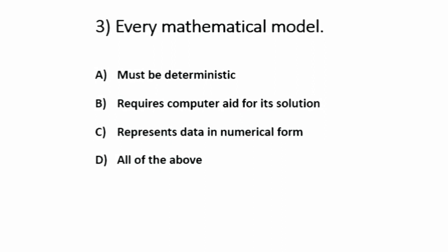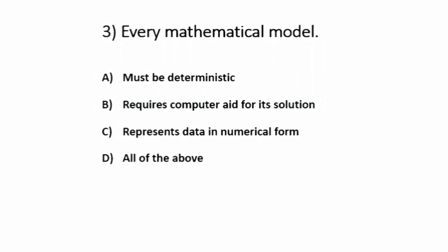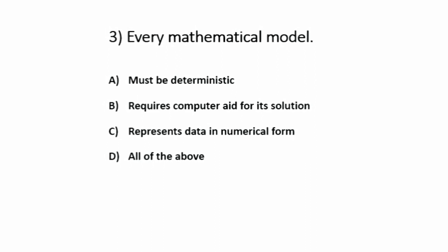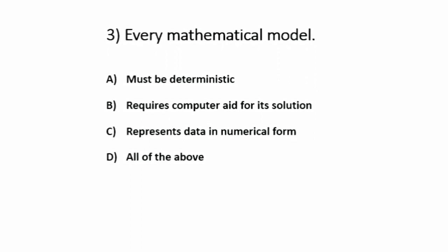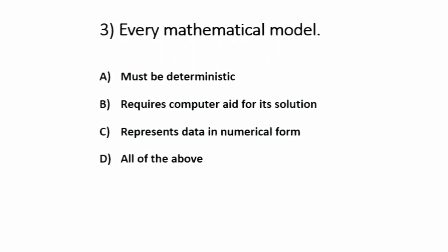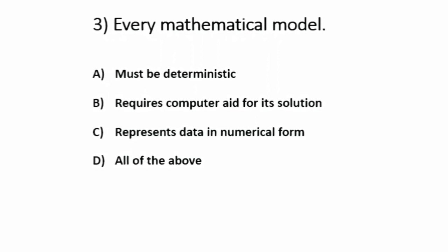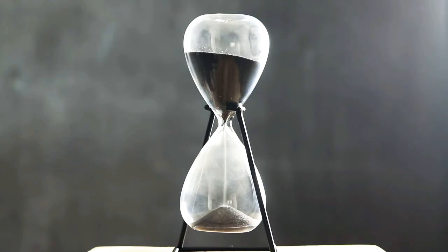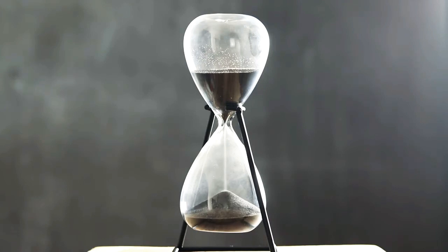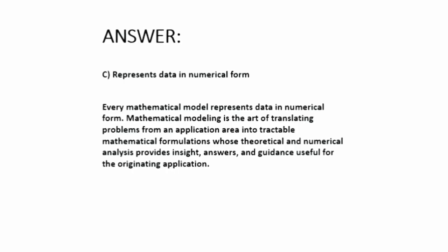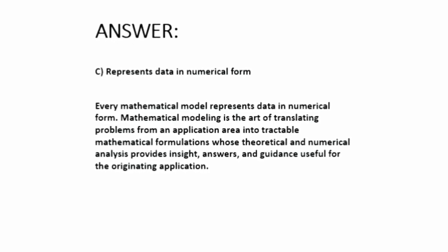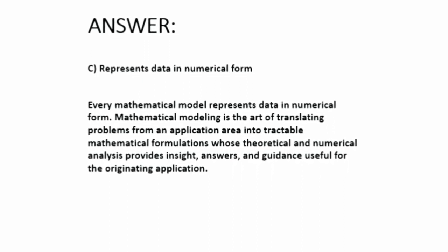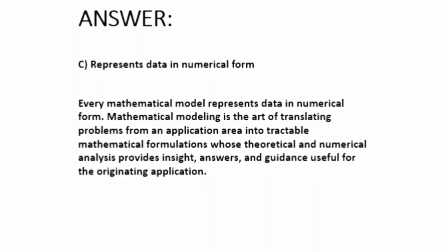Question number 3. Every mathematical model — the options are: option A, must be deterministic; option B, requires computer aid for its solution; option C, represents data in numerical form; option D, all of the above. The answer is option C: represents data in numerical form.